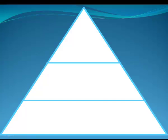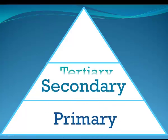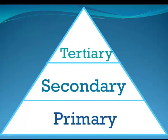Primary, secondary, and tertiary are the three types of sources that you can use for research. We will discuss the differences among these and look at examples for each type.